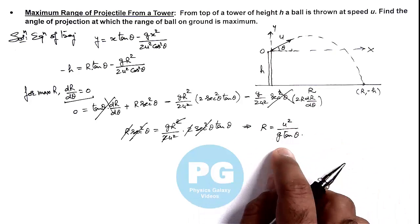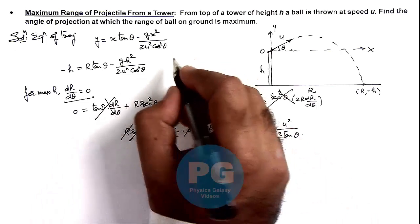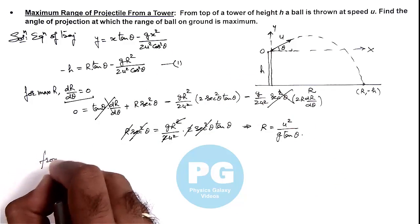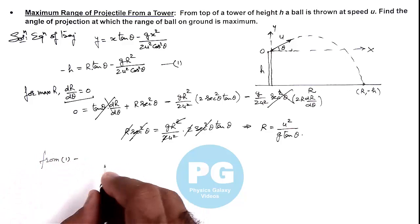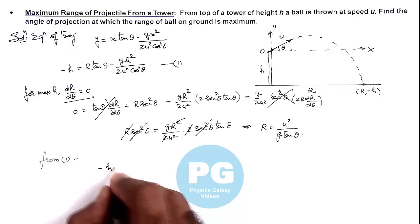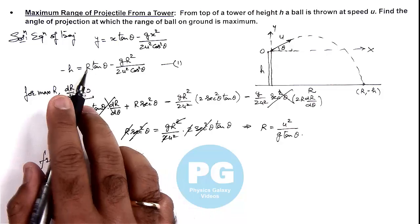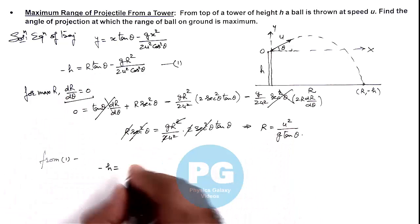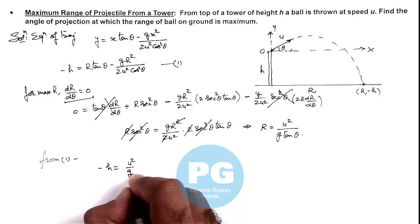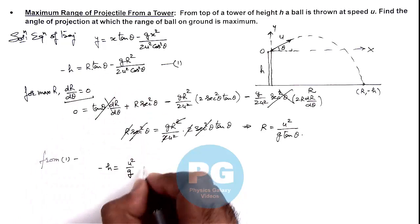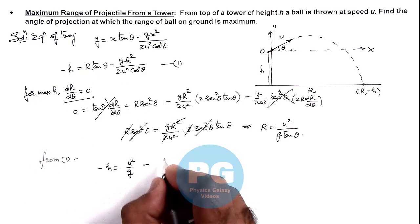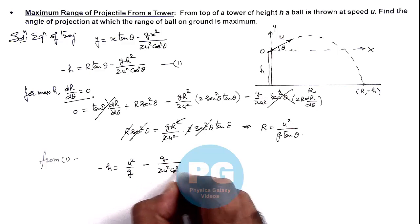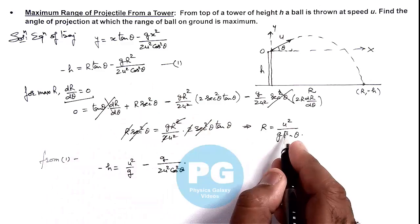We now substitute R = u²/(g·tan θ) back into equation 1. We get: −h = (u²/(g·tan θ))·tan θ − (g/(2u²·cos²θ))·(u²/(g·tan θ))². The tan θ cancels in the first term, giving u²/g. Then squaring R: u⁴/(g²·tan²θ), where tan²θ = sin²θ/cos²θ.